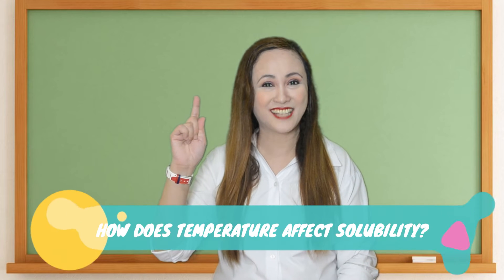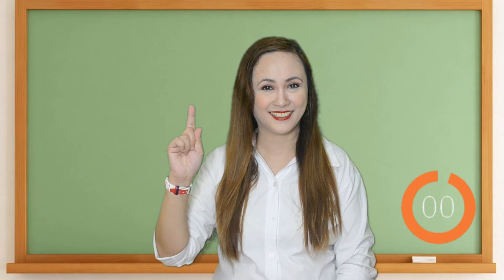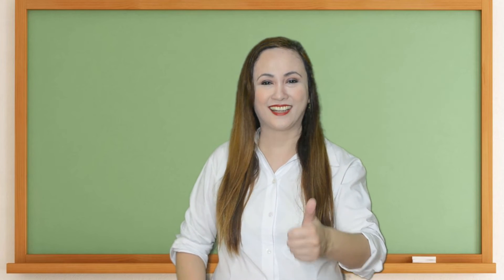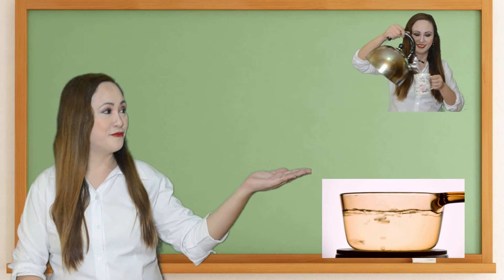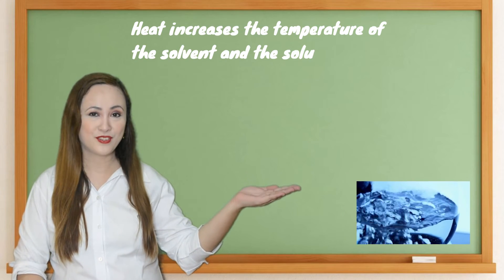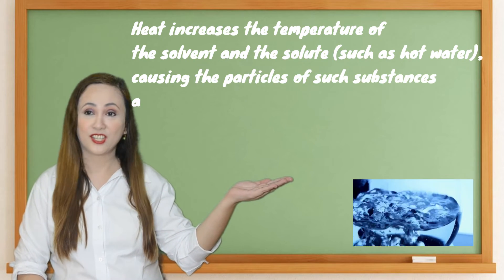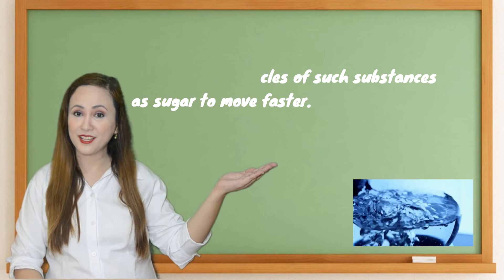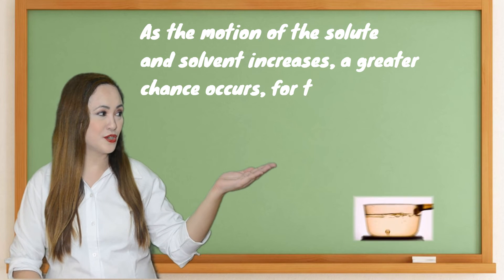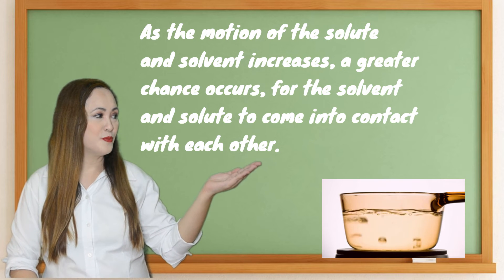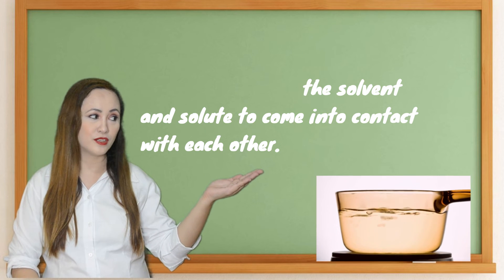How does temperature affect solubility? Heat energy affects how a solute dissolves in a solvent. Heat increases the temperature of the solvent and solute, such as hot water, increasing the motion of the particles. As the motion of the solvent and solute increases, a greater chance occurs for the solvent and solute to come in contact with each other.